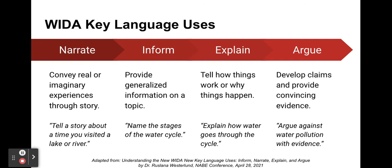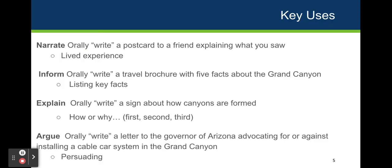Now that you have completed this activity, we are going to talk more about the four key language uses: narrate, inform, explain, and argue. For example, you might tell a story about a time you visited a lake or river to narrate, name the stages of the water cycle to inform, explain how water goes through the water cycle, or argue against water pollution with evidence. These are really good ways to think about how we use language differently, as seen in the Grand Canyon activity.